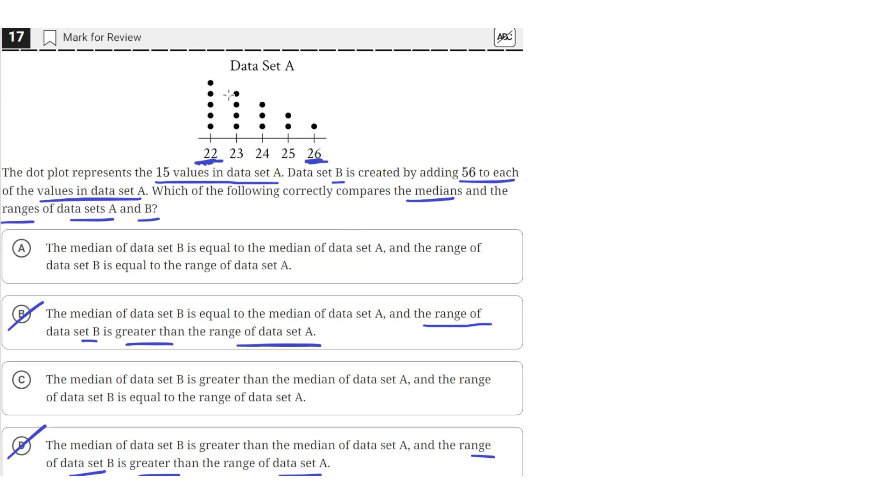Now looking at the median of these data sets, the median is going to be a value between 22 and 26. We don't actually need to calculate it to solve this problem. So the median will be between 22 and 26. But in data set B,